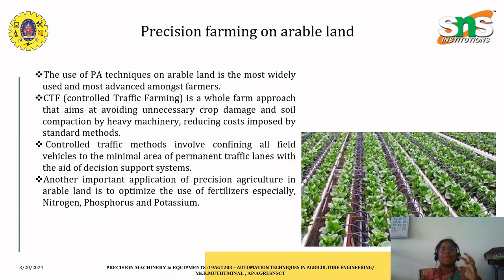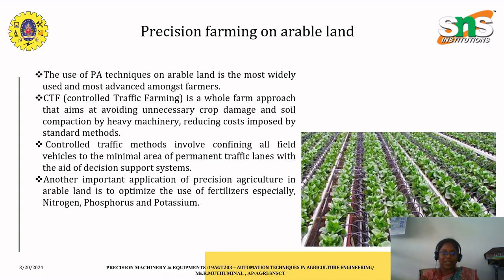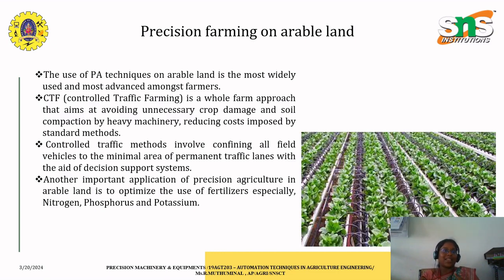So this is what we have covered for today's class. We have seen what precision farming is, what tools and equipment are involved in precision farming, and how we can apply these tools and equipment in cultivating crops to provide a very good yield with good quality, meeting food necessities. We will continue at the next class. If you have any doubts, you can contact me anytime. Thank you, see you at the next class.